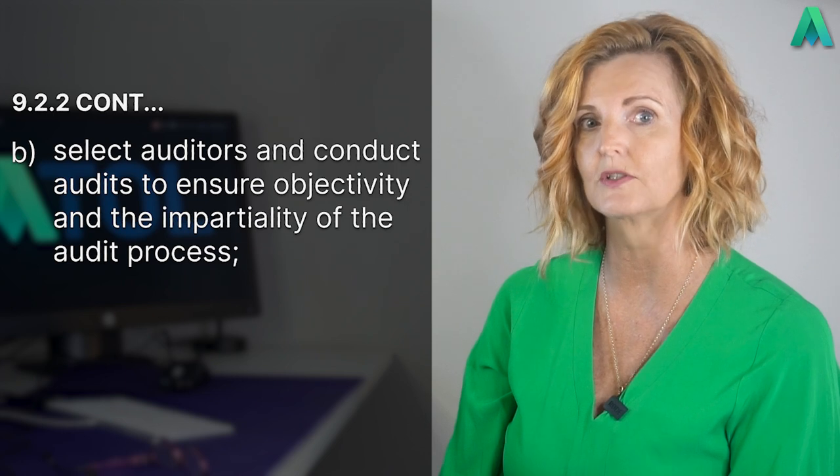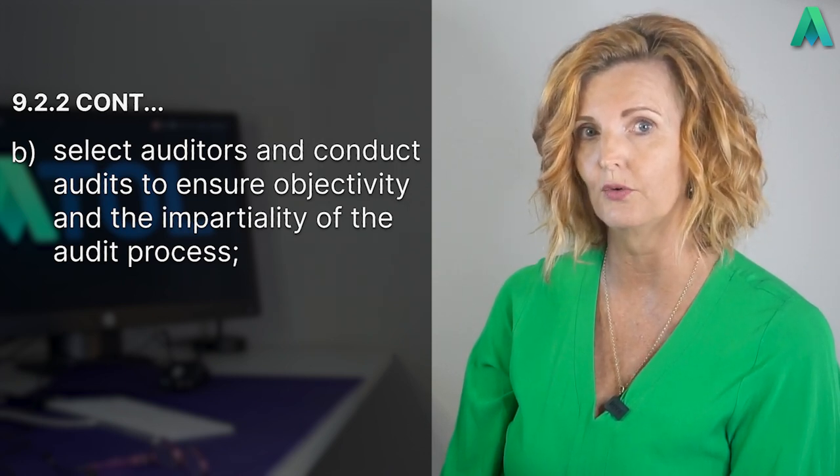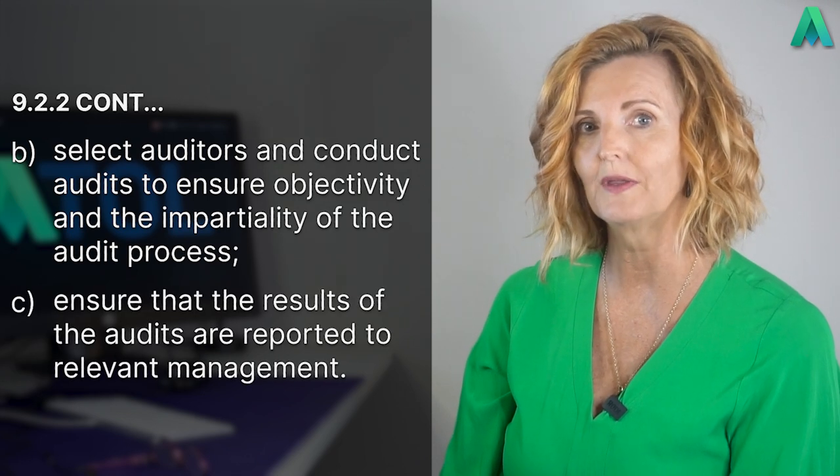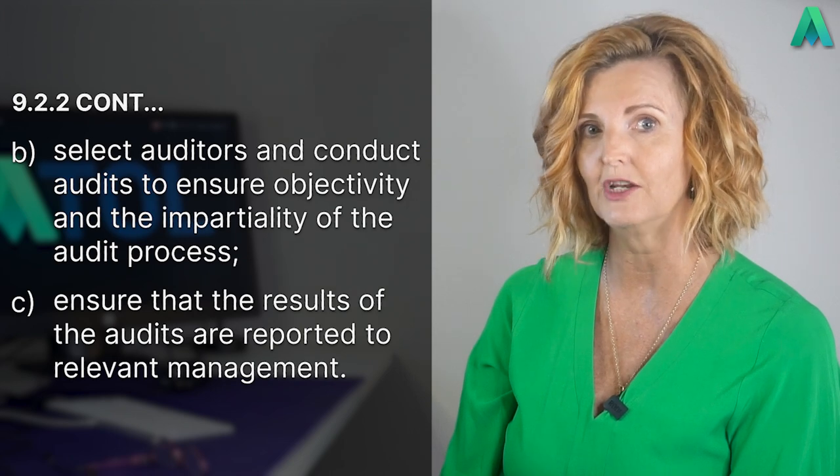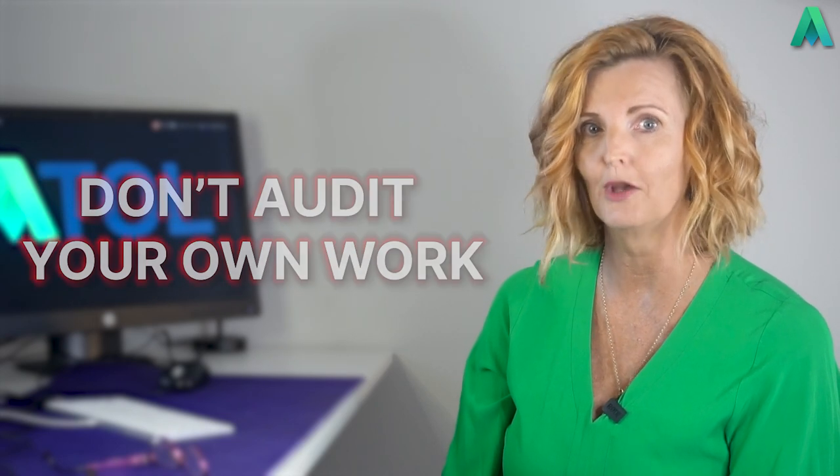Then finally, we have point B: select auditors and conduct audits to ensure objectivity and the impartiality of the audit process. And C: ensure that the results of the audits are reported to relevant management. To summarise these two final points: don't audit your own work. So if you generate the evidence within the scope of the audit, then you shouldn't be auditing that area. You need to ensure another auditor who is impartial and has no conflict of interest is assigned to that audit in your audit program. And then once you have completed your audit report, ensure that it is provided to relevant management within the business and relevant to the scope of the audit conducted.